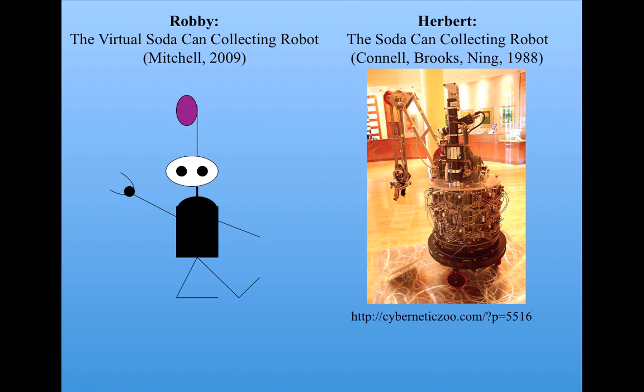Robby was inspired by a real robot called Herbert, which operated in the 1980s in the MIT Artificial Intelligence Lab. It went around the lab on its wheels, going into the different offices and collecting empty soda cans and taking them to the recycle bin. Herbert was the work of Jonathan Connell, a graduate student at MIT working with Rod Brooks and Peter Ning, and was a very impressive robot that used only very simple algorithms to control its behavior.